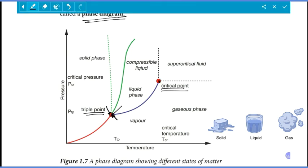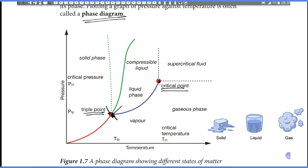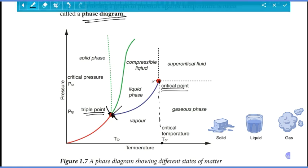The critical point is where the critical temperature and critical pressure of a substance meet. Above the critical temperature, a substance cannot be liquefied regardless of pressure applied.